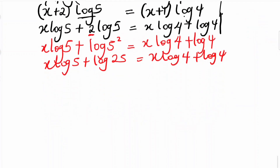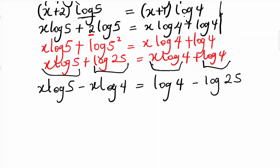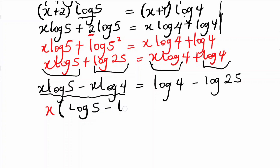Then the next thing we do is to collect like terms — bring all the terms that have x to one side and all the constant terms to the other side. So we have x·log 5 minus x·log 4 is equal to log 4 minus log 25. Then factoring out x from the left side, we are left with x·(log 5 − log 4) is equal to log 4 − log 25.